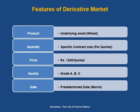Now the features of derivative market. When we enter into derivative market, five things are predetermined: the product in which we trade, the quantity, the price, the quality, and the date of delivery. For example, if we are dealing in a wheat derivative, our product is wheat — that is our underlying asset. We specify the quantity of wheat, the price per quintal, the quality of wheat we have promised to sell, and the date of selling. So all five parameters are predetermined in the derivative market at the time the contracts are signed.